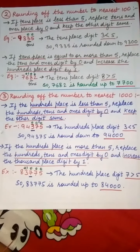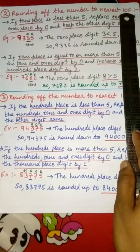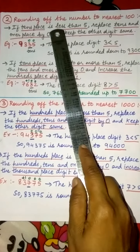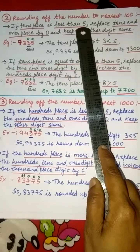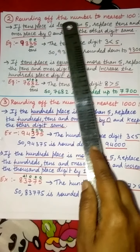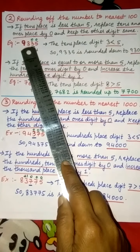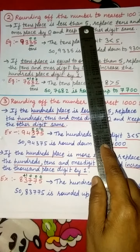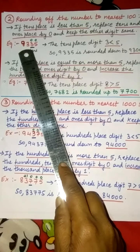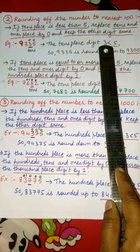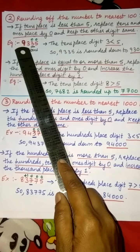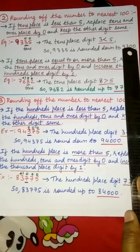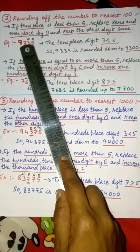Now we will discuss rounding off numbers to the nearest hundreds. Rule 1: if the tens place digit is less than 5, replace the tens and ones digits by 0 and keep the other digits the same. For example, 9,335. The tens place digit is 3, and 3 is less than 5. So we write 0 in the tens and ones places, and 9 and 3 remain the same. So 9,335 is rounded down to 9,300.